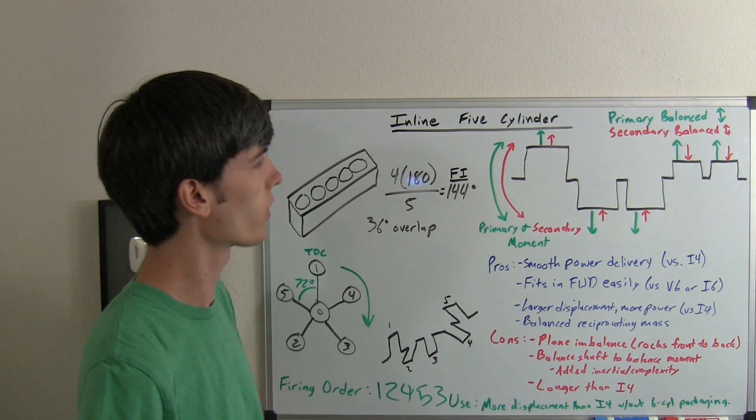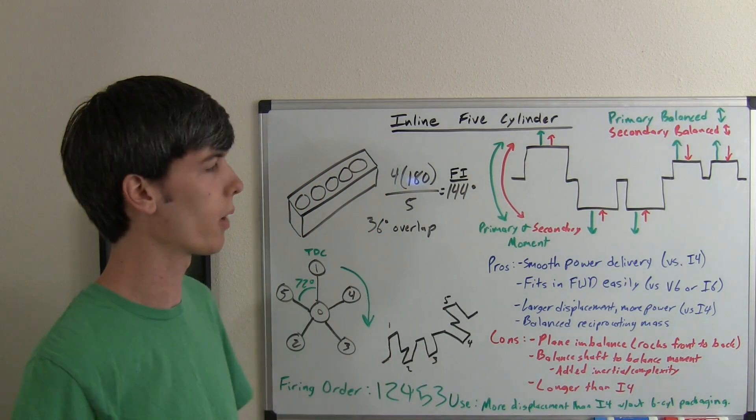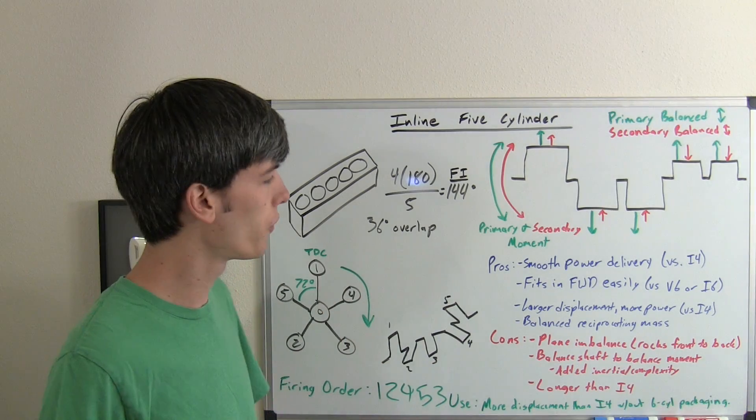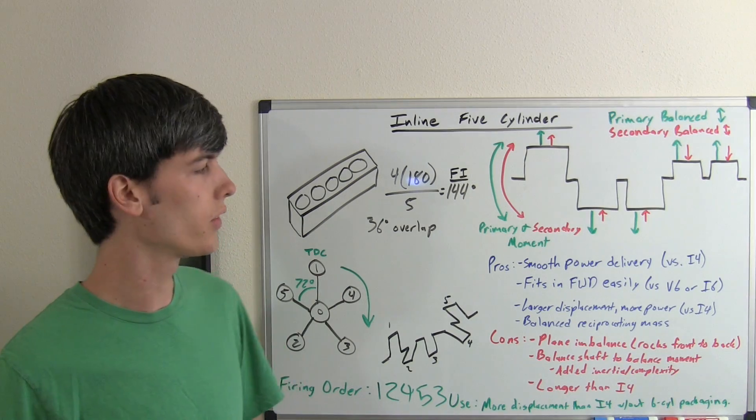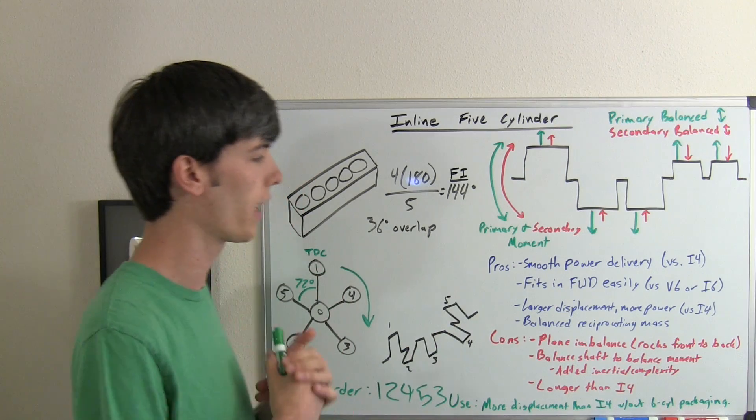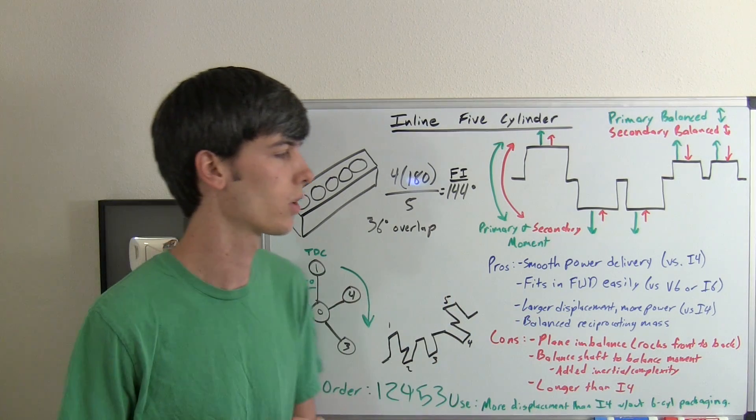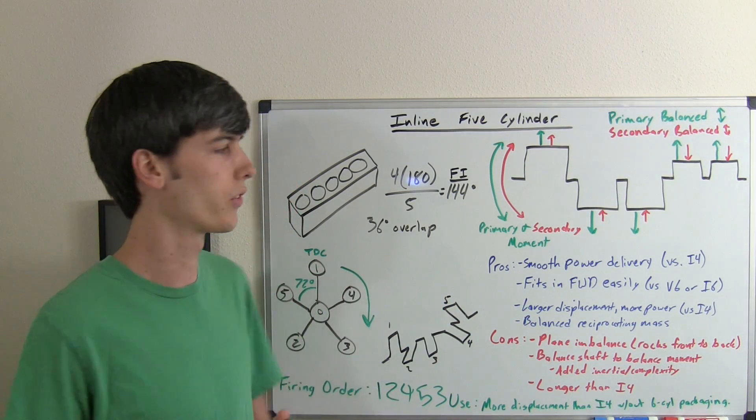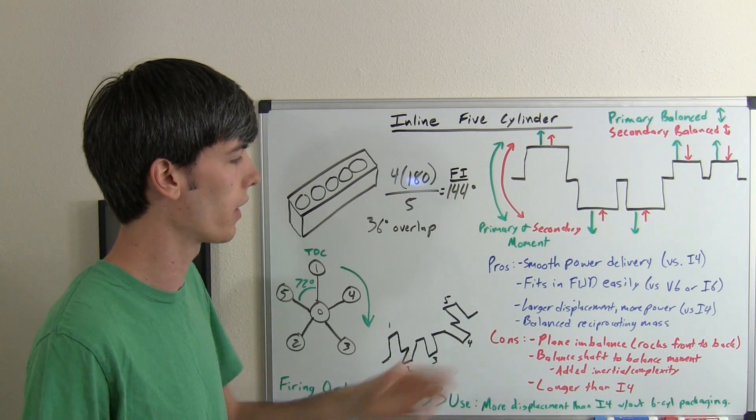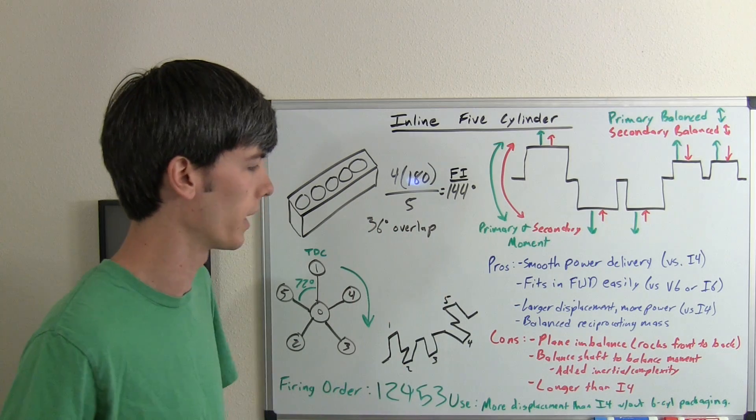Benefits of a five-cylinder engine: smooth power delivery versus the inline four, that's probably its biggest advantage. It also fits in front-wheel drive vehicles easily versus a V6 or an I6. It's a bit narrower than a V6, and it's not as long as an I6. It allows for a larger displacement engine versus the inline four, which could give you more power, and balanced reciprocating mass in the vertical plane.